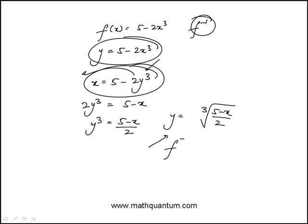So this would be the inverse function, which means f of minus 1x would be cube root of 5 minus x over 2.